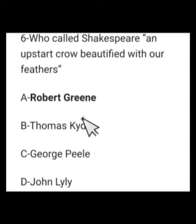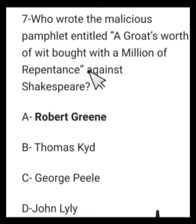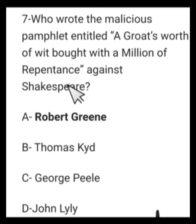Number 7: Who wrote the malicious pamphlet entitled 'A Groatsworth of Wit Bought with a Million of Repentance' against Shakespeare? Options: Robert Greene, Thomas Kyd, George Peele, or John Lyly. This pamphlet was written by Robert Greene, option A.